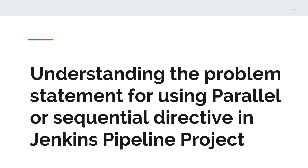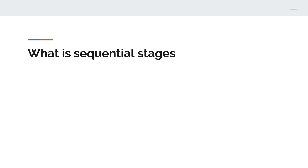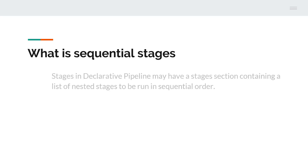Let's understand what exactly sequential stages are in Jenkins pipeline. The stages in a declarative pipeline may have a stages section containing a list of nested stages to be run in sequential order. We've already seen this in the previous video - you will have a build stage, then a deploy stage, and once that's completed a test stage. That's how we create a sequential stage, and we're going to see this in the demo section.